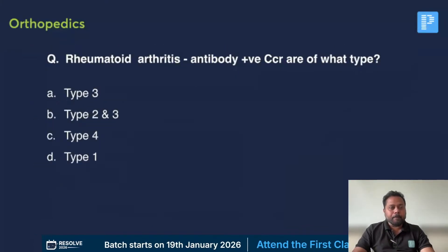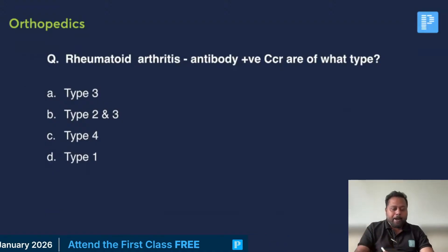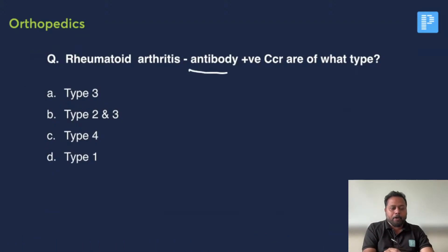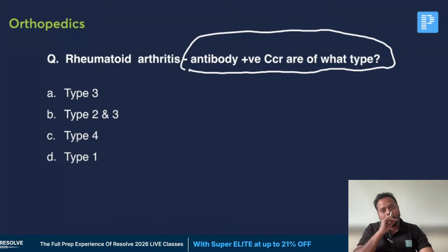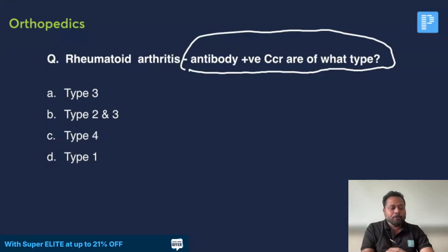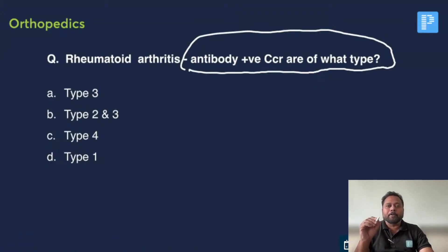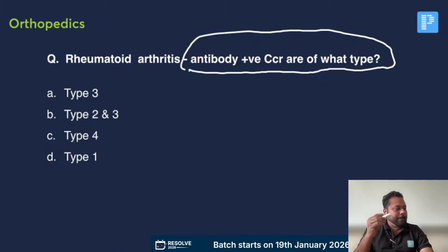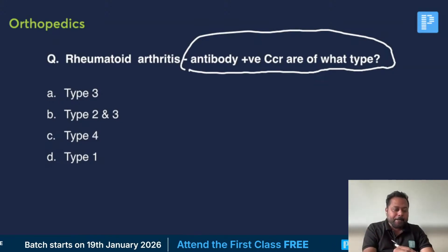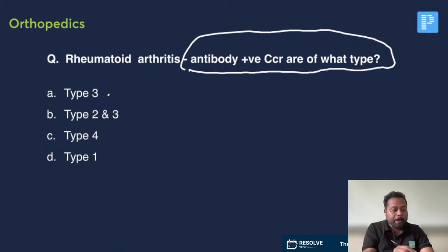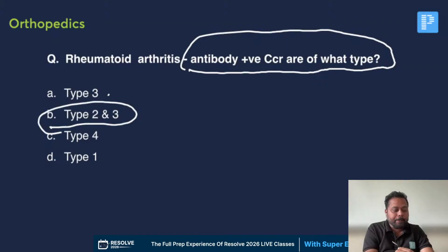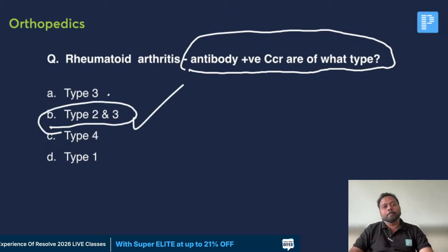We will move on to the first question. Rheumatoid arthritis — the antibody positive CCR — what type of antigen-antibody reaction is it? This is not purely an ortho question; it is a microbiology-cum-ortho question, but it's straightforward. So, the answer: mainly it is Type 3, and also Type 2. 75% mainly it is Type 3 and 25% it can be Type 2. If the choice is Type 2 and Type 3, that should be the right answer.